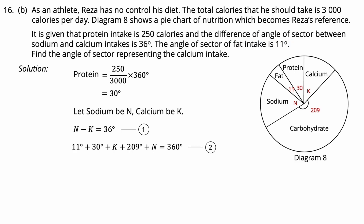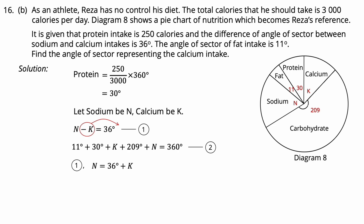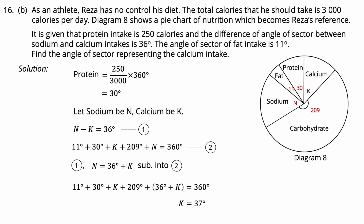From Equation 2 and Equation 1, transpose K to the right-hand side and substitute N equals 36 plus K into Equation 2: 11 + 30 + K + 209 + 36 + K = 360 degrees. Solving gives K equals 37 degrees.